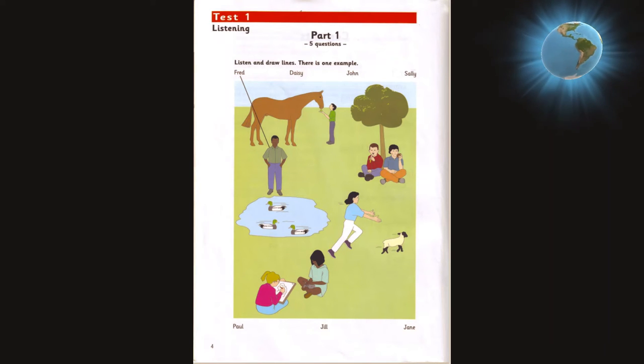Two. I'm looking for John. Can you see him? What's he wearing today? A green t-shirt, I think. Oh, yes. He's giving an apple to the horse.